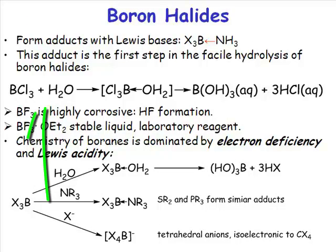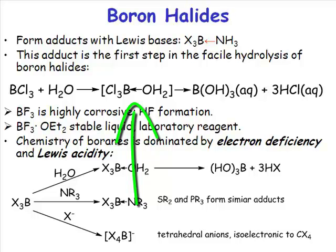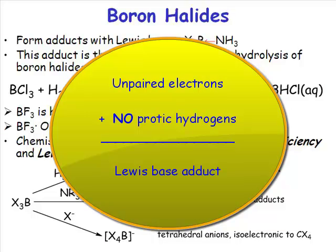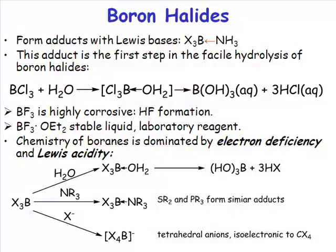For example, with boron trichloride and water, the first thing that will happen is coordination of one of the lone pairs on oxygen to the vacant orbital on boron, forming an adduct. If you have a Lewis base that is an ether, an alkyl amine, a trialkyl phosphine, or dimethyl sulfide — anything that has lone pairs of electrons but does not have protic hydrogens — you will simply form a Lewis acid-Lewis base adduct.